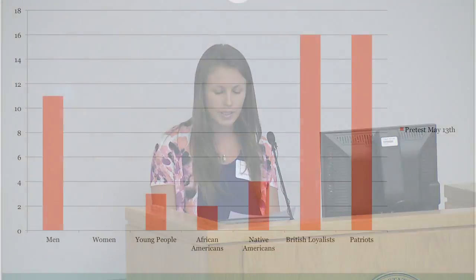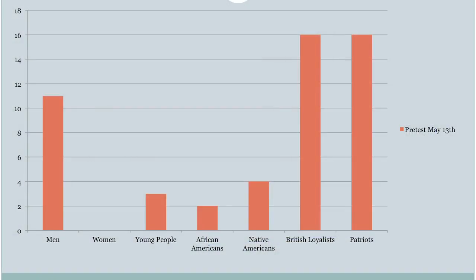The groups listed were: men, women, young people, African Americans, Native Americans, British Loyalists, and Patriots. From the results of the pretest, we were able to see that most students only believed that men were involved and were either a Loyalist or a Patriot.